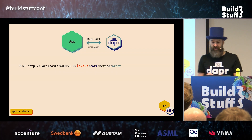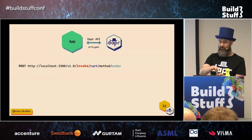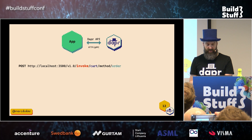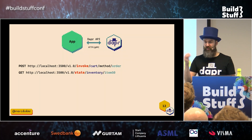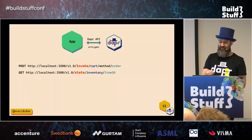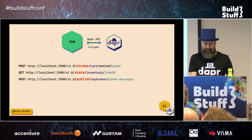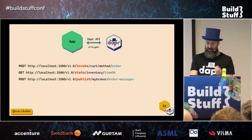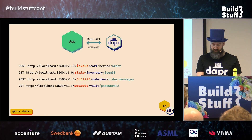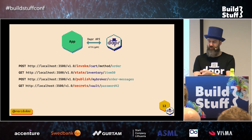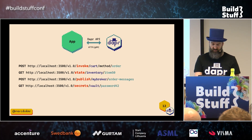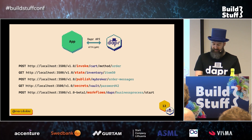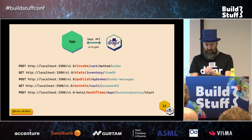For instance, if you want to invoke a method on another service, you can make a POST call to the invoke endpoint. If you want to retrieve a bit of state, you can do a GET to the state endpoint. If you want to publish a message to the order messages topic on a PubSub broker, you can do a POST. If you want to retrieve a secret, you can use the secret endpoint. And we'll be talking about the workflows one.